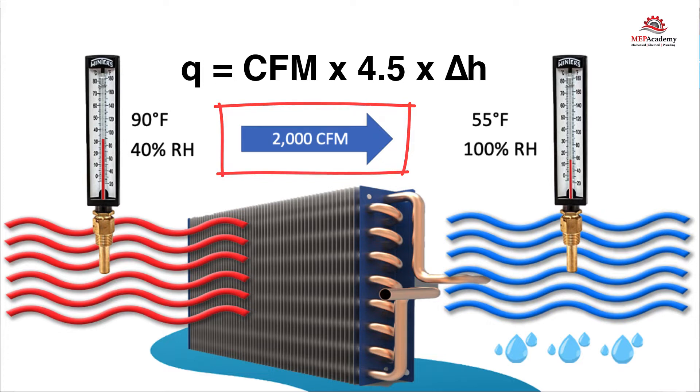The temperature of the entering air is 90 degrees Fahrenheit and 40% relative humidity, with the leaving air at 55 degrees Fahrenheit and 100% relative humidity. With this information, we can solve for how many BTUs are being supplied to the air.